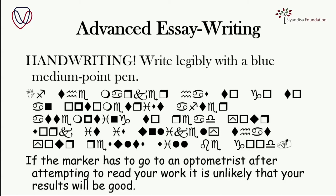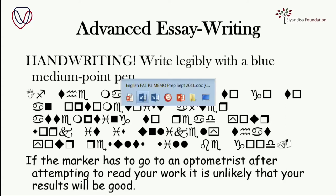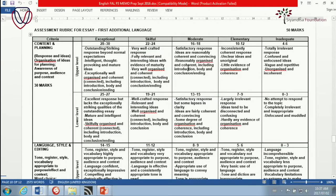So the first thing you must do is ensure that you have legible handwriting. Legibly means it can be read. I myself do not have a neat handwriting, but it is legible. Very few people struggle to read what I have written. Now, the first thing I want to do in this session is to look at how an essay is marked. Here is the rubric that is used — this is one of the latest ones. We look first at content and planning.